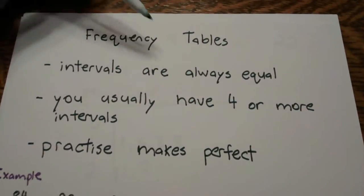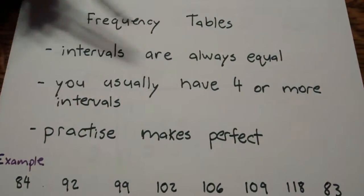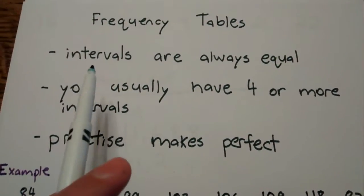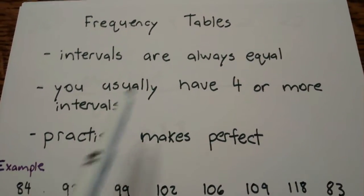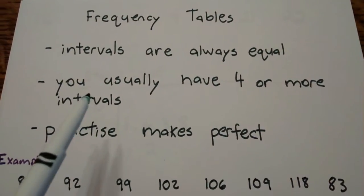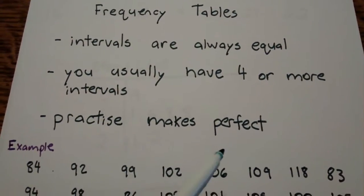Excellent, so today we're looking at frequency tables which is the next step from stem and leaf plots. The important thing to remember when looking at frequency tables is intervals are always equal. You usually have four or more intervals and my example will show you why and always practice makes perfect.